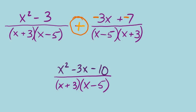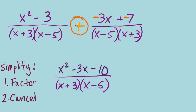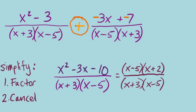Remember the unwritten rule from numerical fractions: your final fraction needs to be simplified in lowest terms. For rational expressions, simplifying comes down to two steps — factor, then cancel. The denominator is already factored, but can we factor the numerator? x squared minus 3x minus 10 factors as x minus 5 times x plus 2. The denominator is brought over in factored form, and then the x minus 5 factors cancel, leaving us with the final answer: x plus 2 over x plus 3.